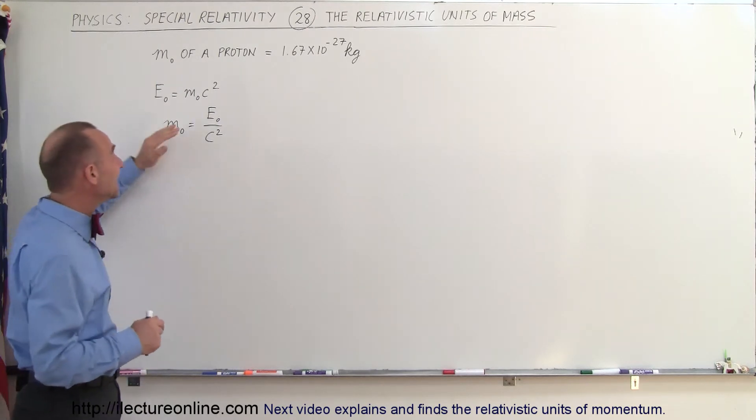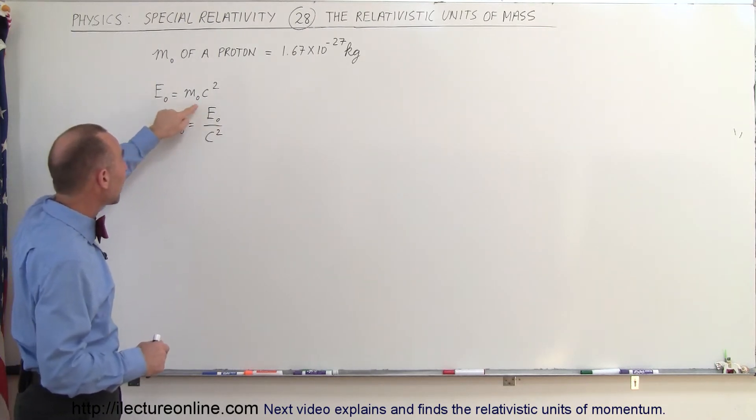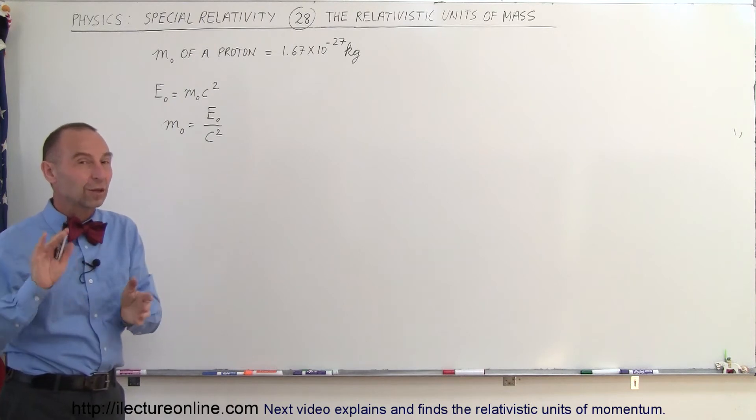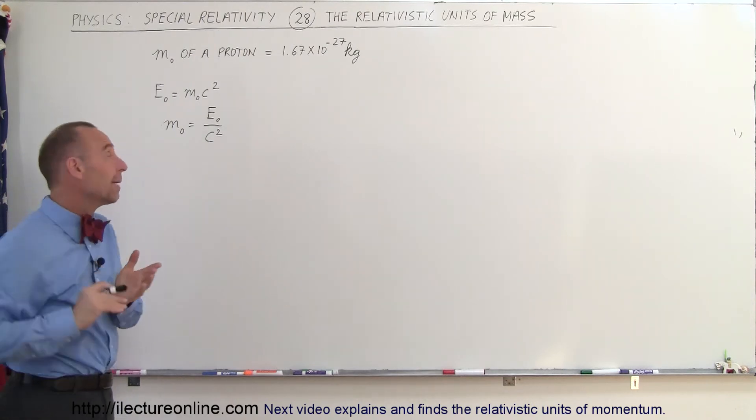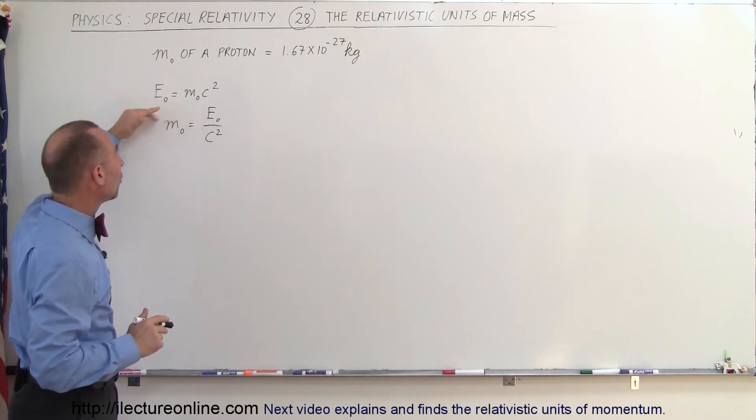But we also know that E equals MC squared, and the sub-naught symbol means when it's at rest, because we know that when objects move very close to the speed of light, they gain a lot of mass. And so this is their rest mass energy.